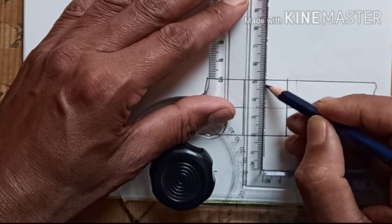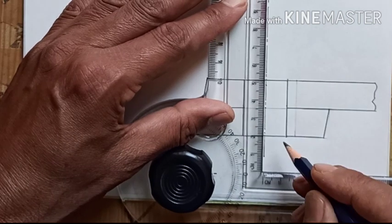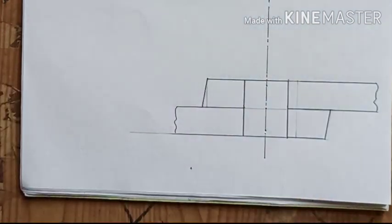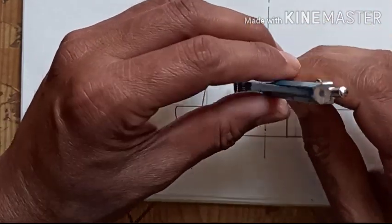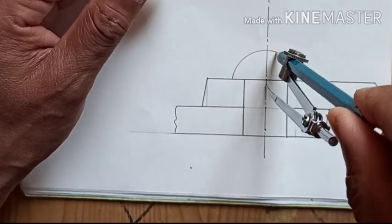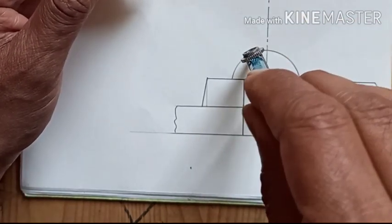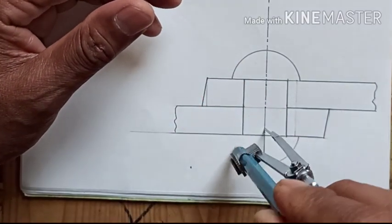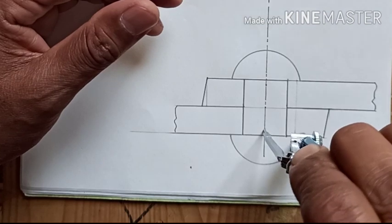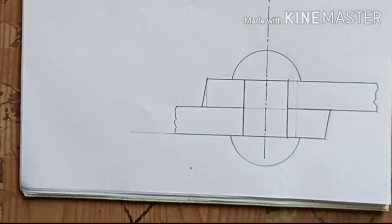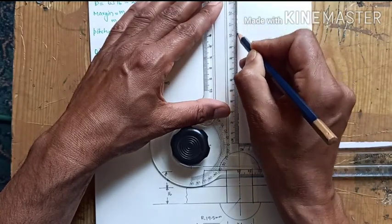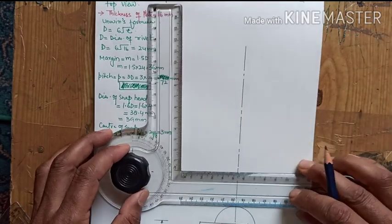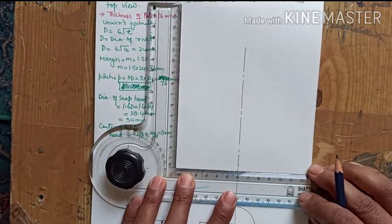From the top we can find out the center of the rivet head which is 3mm, which we have calculated above at the upper end and below at the lower end. Now we can keep the compass for the snap head we have to draw. The rivet snap head is 19.5mm. We have to draw the snap head keeping the compass at the center which was 3mm below and 3mm up.